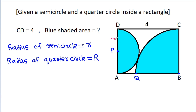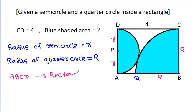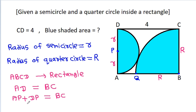Then DP equals small r, AP equals small r, and BC equals capital R. Since ABCD is a rectangle, AD equals BC. AD is AP plus DP, which equals small r plus small r, and BC equals capital R. Therefore, capital R equals 2 times small r.